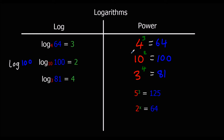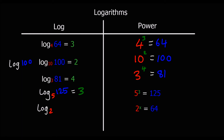So that's converting from logs into powers, and now we're going to go back — powers into logs. We've got log: the base is 5, the answer is 125, and it equals 3. And finally we've got log: the base is 2, the answer is 64, and that equals x. So this is the conversion we're going to be making a lot of the time to work out an unknown power.